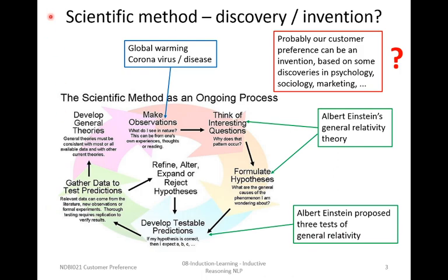Let's start on the scientific method. We can distinguish discovery and invention. The global picture from the previous lecture is that the scientific method is just a process: we make observations, then think about interesting questions, formulate hypotheses, test them, evaluate, and maybe refine. If successful, we can develop general theories. Examples include discussion about global warming and the coronavirus and disease.